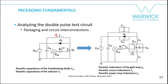Analyzing a conventional double-pulse test circuit, we can add parasitic capacitances and inductances: the parasitic capacitance of the freewheeling diode, the parasitic capacitance of the inductor, the parasitic inductance of the gate loop — from packaging and circuit interconnections — the parasitic source inductance, the parasitic power loop inductance, and the internal gate resistance plus the parasitic capacitance of the MOSFET itself.